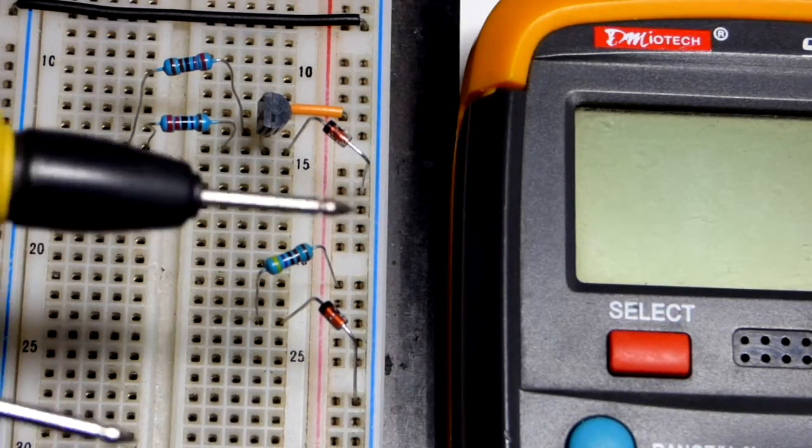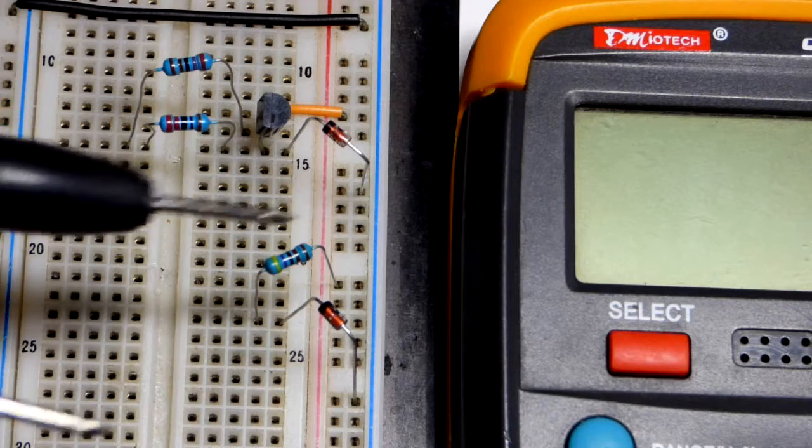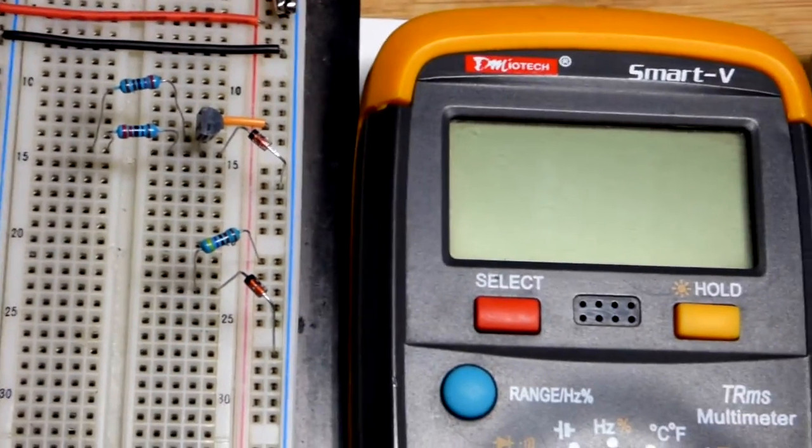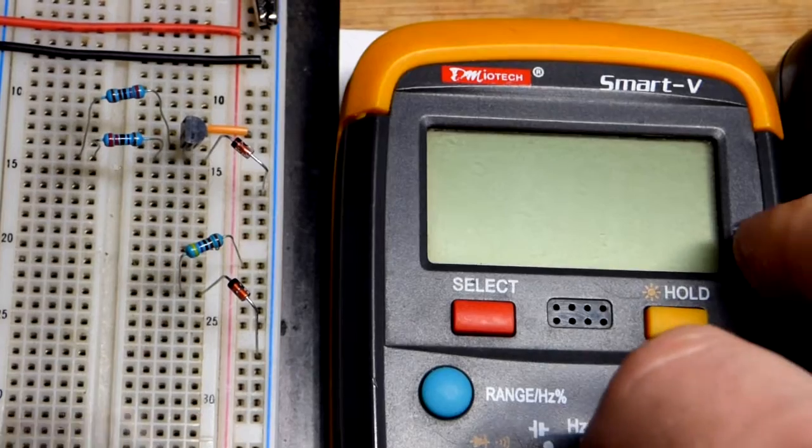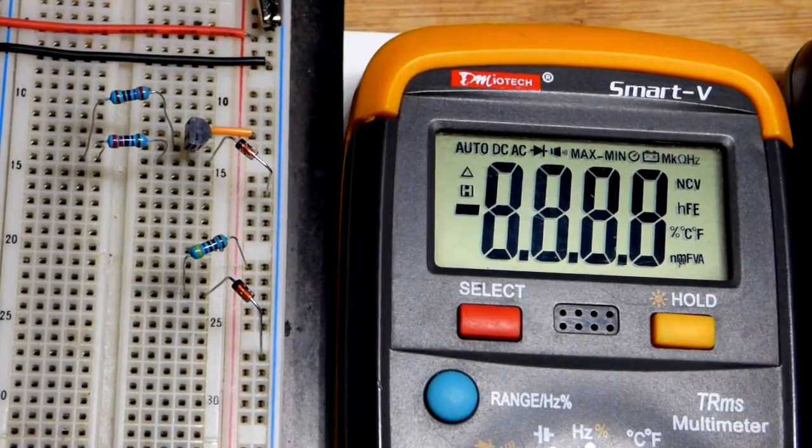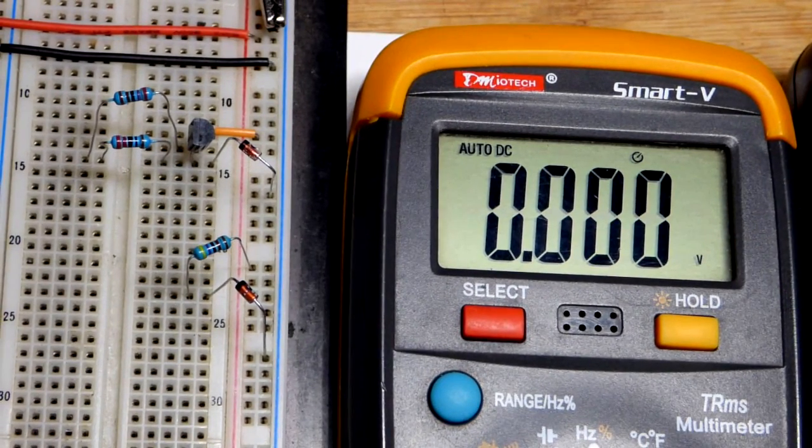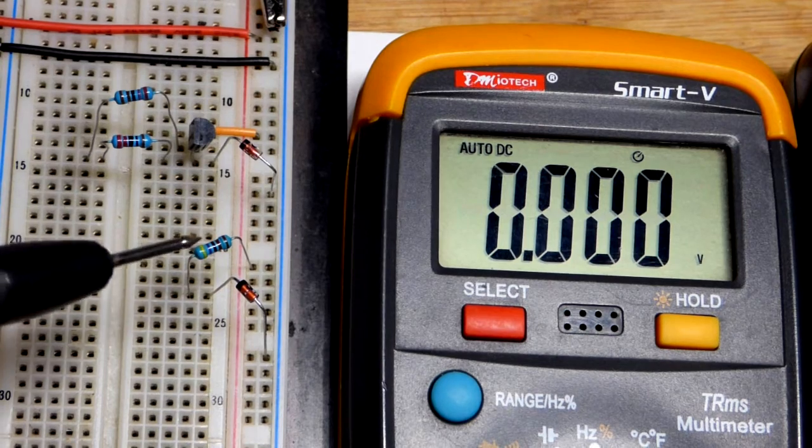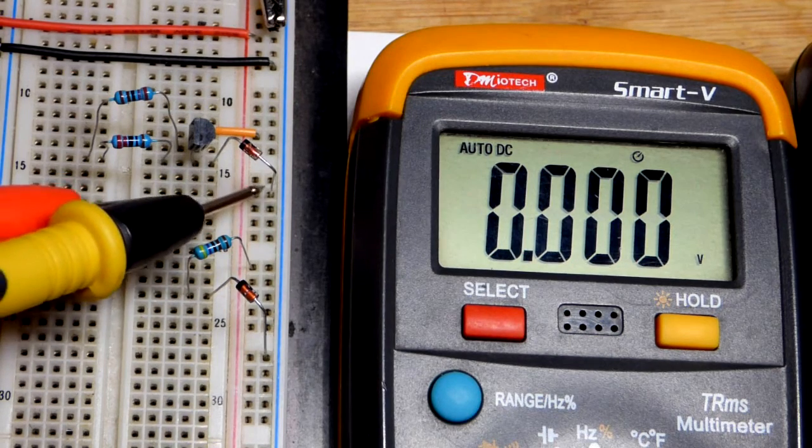So now we'll zoom in to get a closer look at the wiring. I got rid of that gray jumper that was there because it wasn't connected to anything. This is an auto-range meter. All I have to do is set it to voltage and it does the rest. Right now the power supply is set to 20 volts.